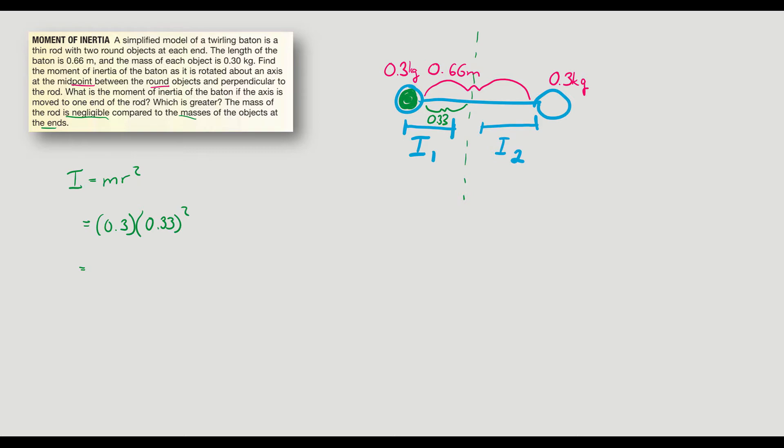And we can multiply all of that and we end up with 0.033. What are the units? Well, we can determine those pretty easy. Mass is kilogram. Radius is measured in meters and it's squared. So there you go, kilograms per meter squared. An odd unit, but that's what it is.